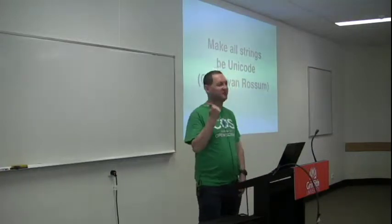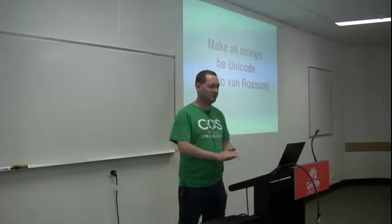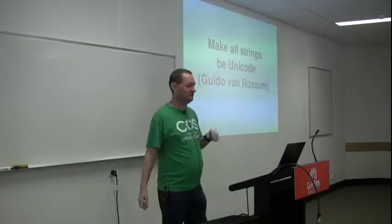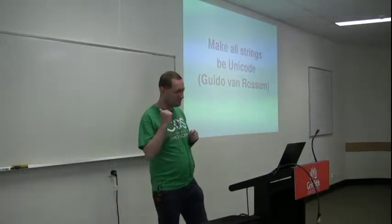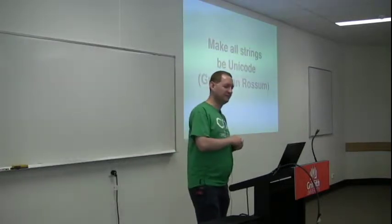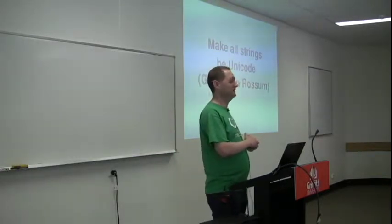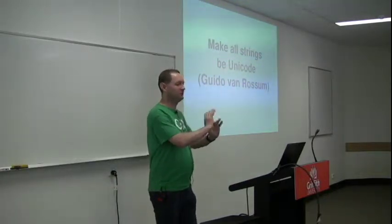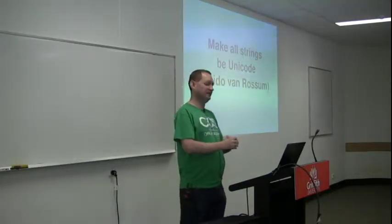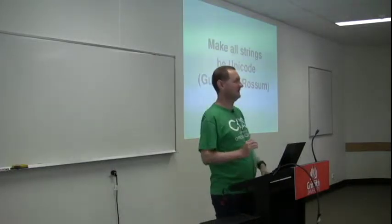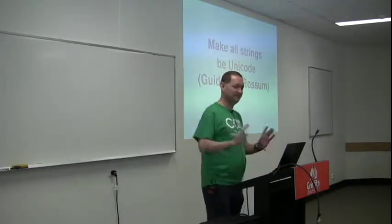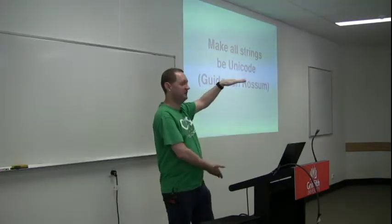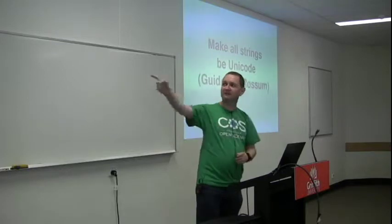It mostly boils down to these five little words courtesy of Guido around 2005. Those five words come from PEP 3100 — Python Enhancement Proposal 3100 — which is the place where Guido put all of the proposals for Python 3 that were considered non-controversial, like nobody thought they were a bad idea. That was just a list of things we already agreed we were going to do.